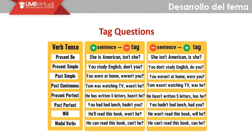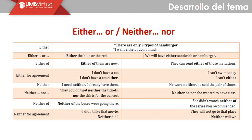También podemos hacer tag questions con modal verbs — aquí el ejemplo con 'can': 'He can read this book, can't he?' — él puede leer este libro, ¿o no?; 'He can't read this book, can he?' — él no puede leer este libro, ¿o sí? Se puede hacer con cualquier modal verb. Para armar la tag question es básicamente fijarse en qué tiempo gramatical se está utilizando y a partir de allí usar el auxiliar que corresponda.